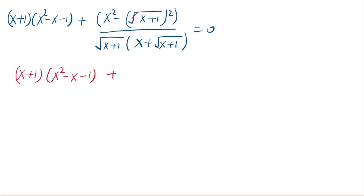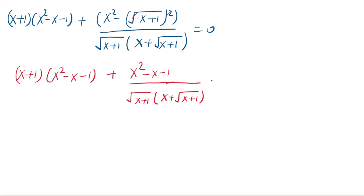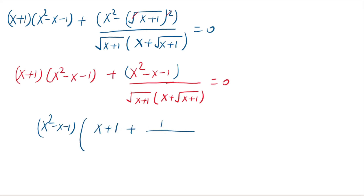The square root squared cancels to give x squared, and multiplying the minus through by x plus 1 gives minus x minus 1. So we have x plus 1 times x squared minus x minus 1, plus x squared minus x minus 1 over square root of x plus 1 times x plus square root of x plus 1, equals 0. Taking x squared minus x minus 1 as a common factor gives x squared minus x minus 1 times x plus 1 plus 1 over square root of x plus 1 times x plus square root of x plus 1, equals 0.